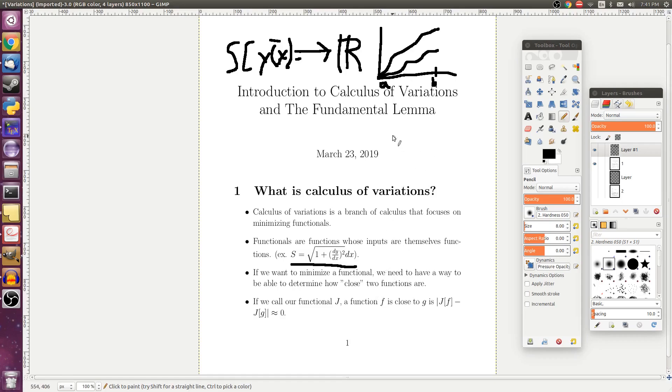So for a functional j, two functions f and g would be close to each other if their difference, after applying that functional, would be close to zero.